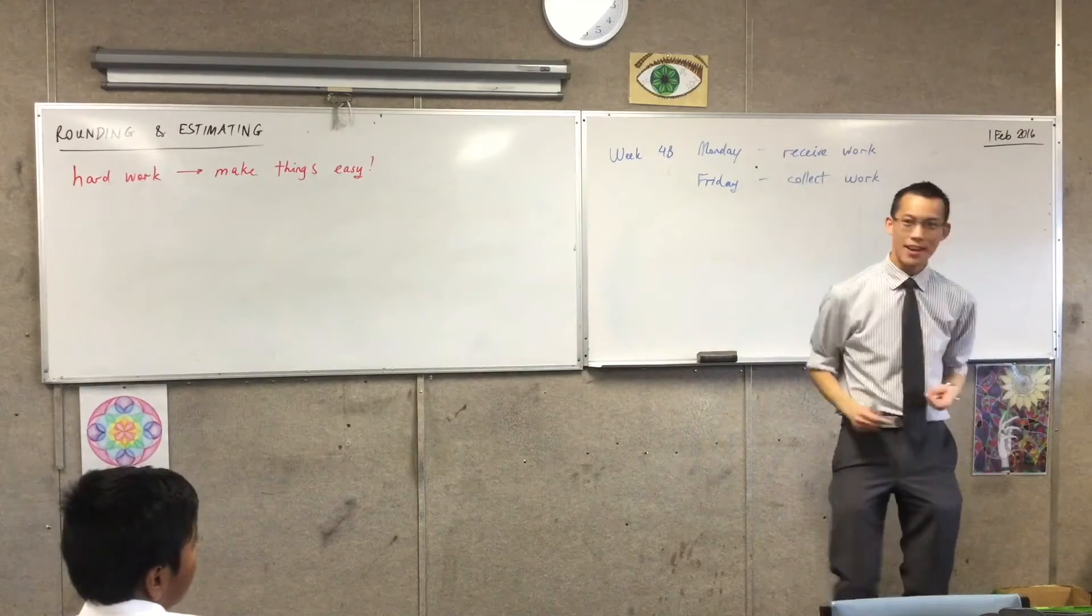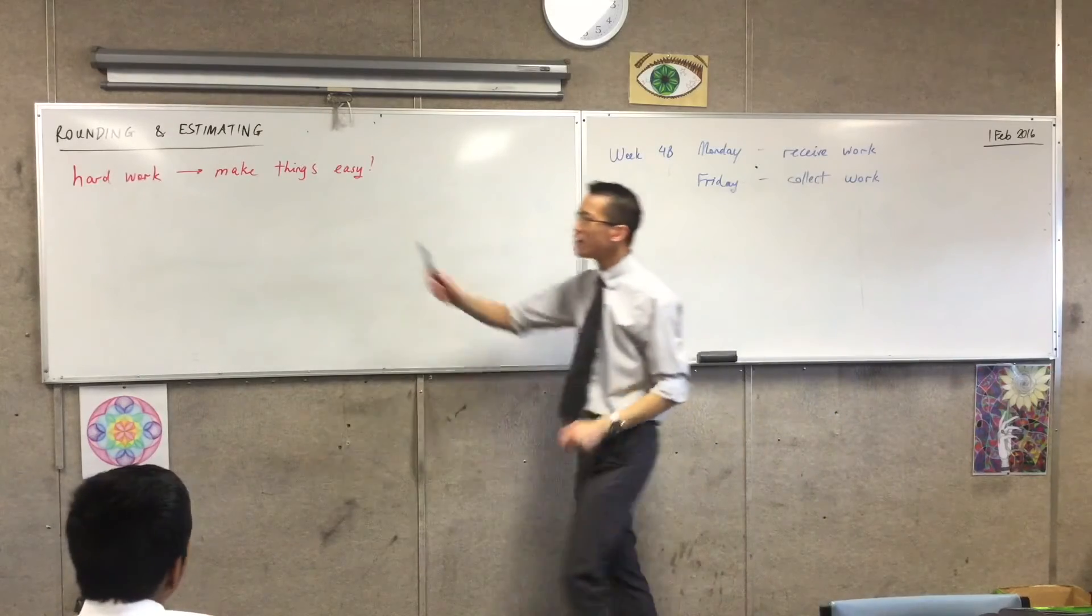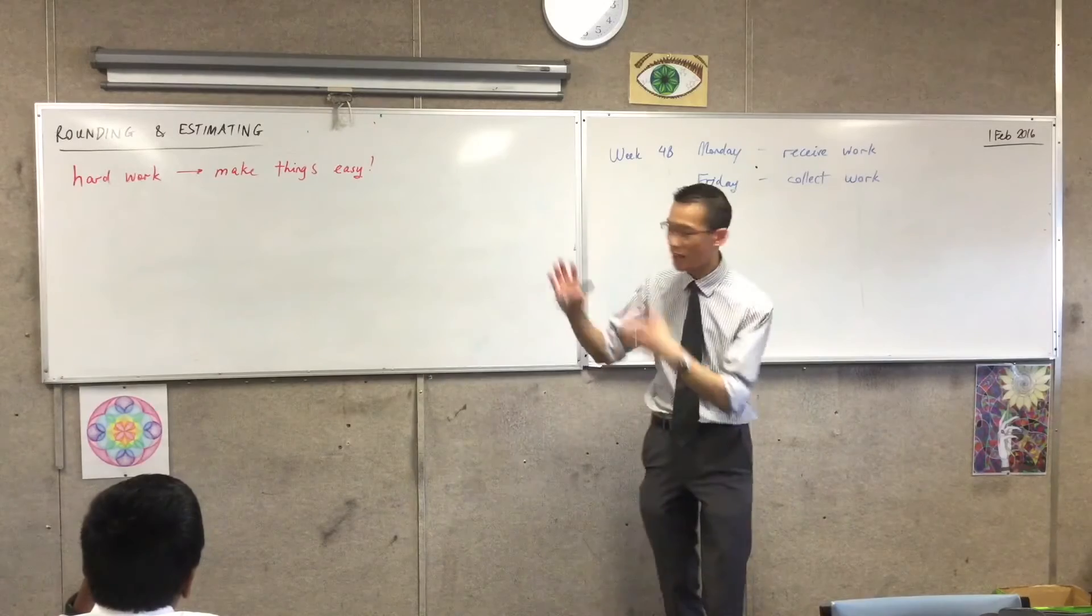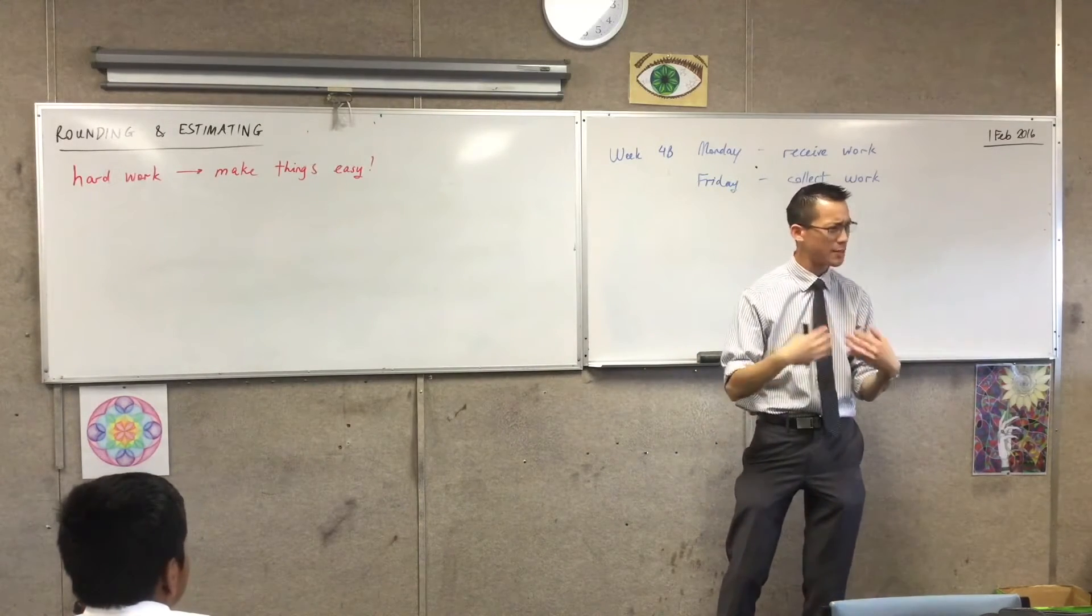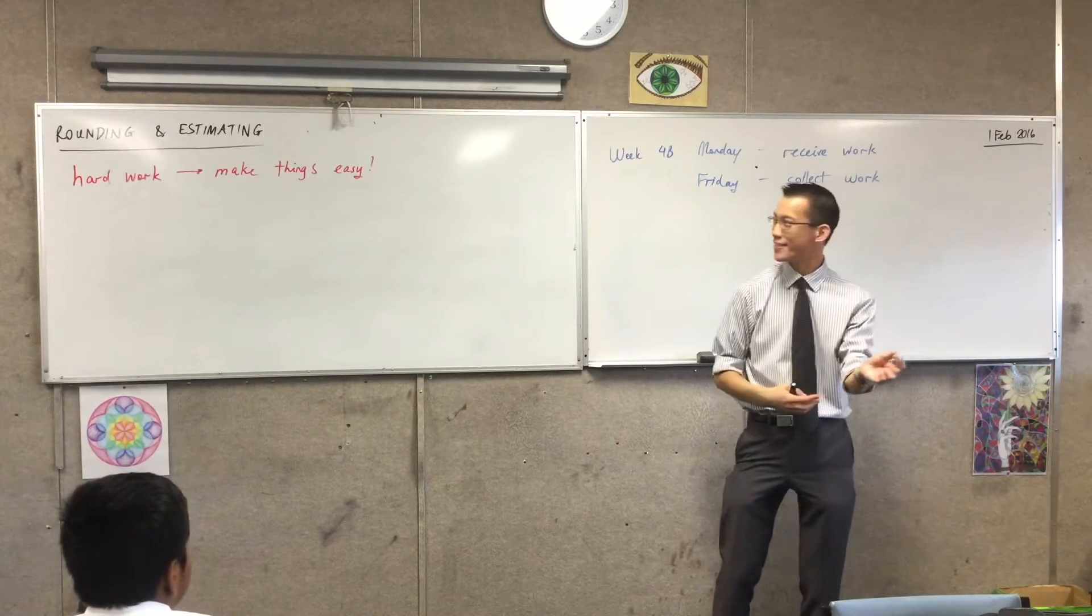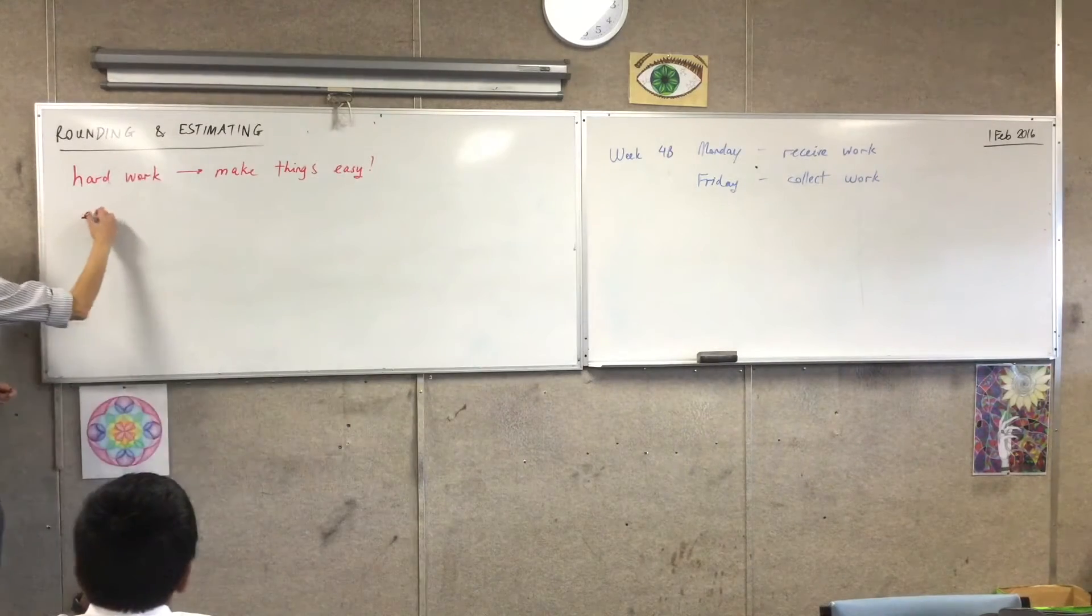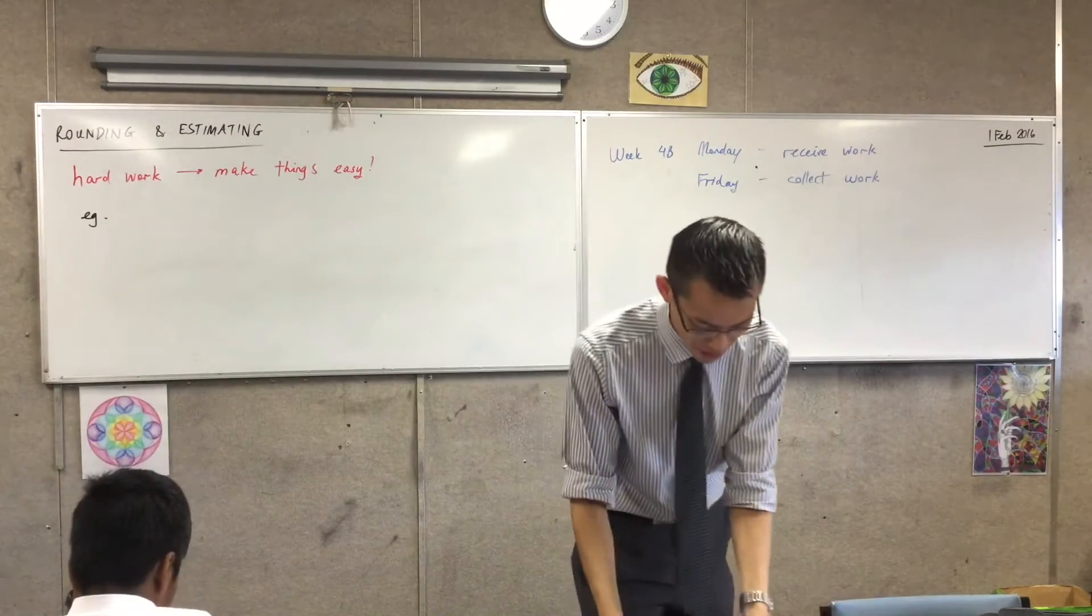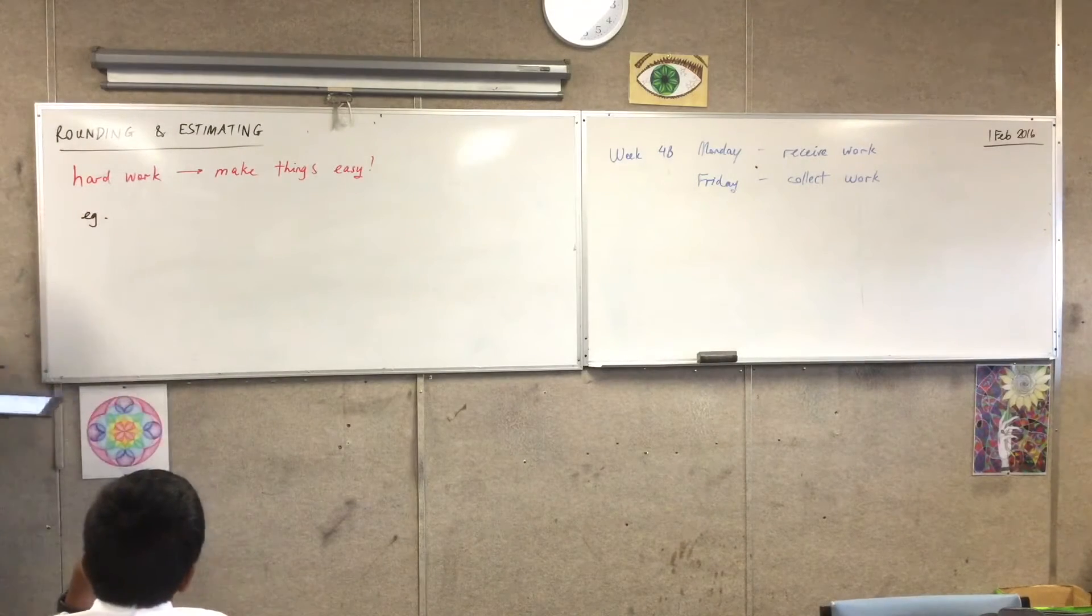So sometimes we call these formulas, sometimes we call them strategies. There's all kinds of names for these things. And rounding and estimating are one of those strategies, right? They're kind of two words for the same thing. It's been hard work to wrap your head around rounding and estimating the first time. Once you do it, it's really helpful. So let me give you an example. I'm going to write down a sum for you. I'm going to put together a bunch of numbers, a list of numbers.